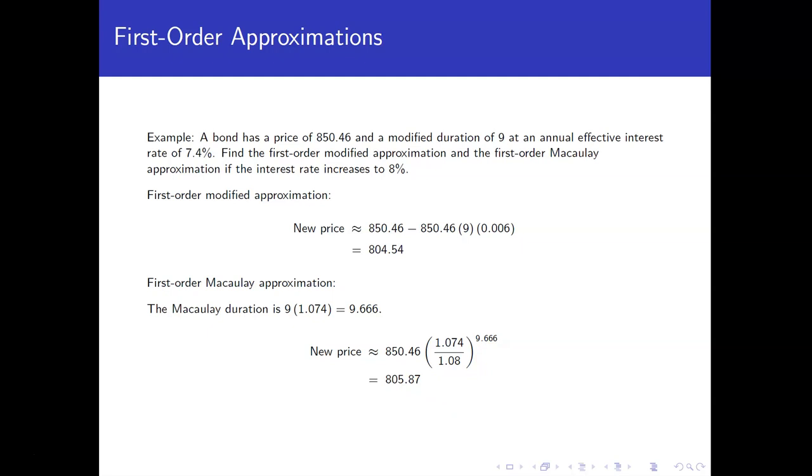Now it turns out that you can show that in general the Macaulay approximation will give you a better approximation to what the new price would be than the modified duration. They're pretty close here, right? They're $1.30 off. But this $805.87 is actually closer to what the price should be versus the $804.52. So just in general, from an accuracy standpoint, the Macaulay approximation gives you a little bit better approximation in most cases.